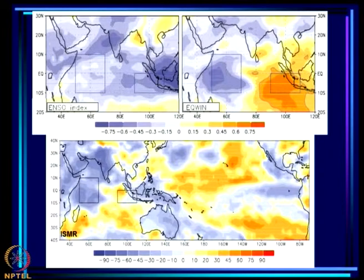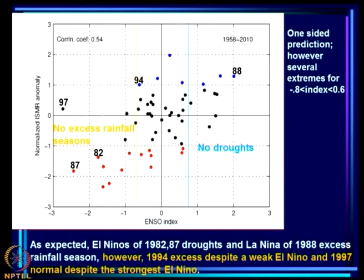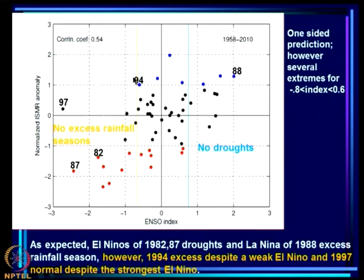What we see here is the nature of the impact of ENSO and EQUINOO and the relationship with ISMR. We have already seen that 1994 and 1997 were years with a strong Equatorial Indian Ocean Oscillation — EQUINOO — which is the second mode important in determining ISMR.